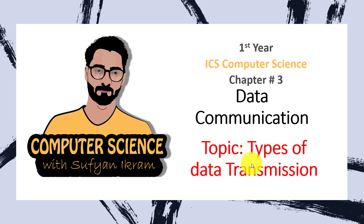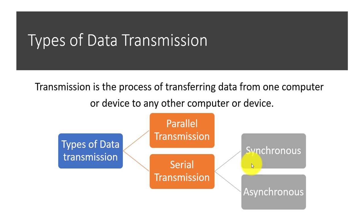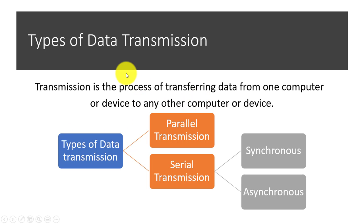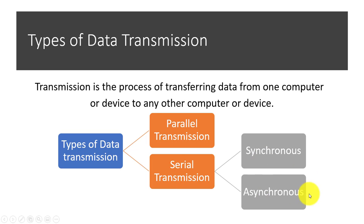It is basically part 2. In part 1 we have seen the definition of transmission — it is a process of transferring data from one computer to another computer, and that data transferring process is called Data Transmission. Now, we have seen two types of data transmission: parallel and serial, which we discussed in the last lecture. Now, we will discuss synchronous and asynchronous data transmission types.